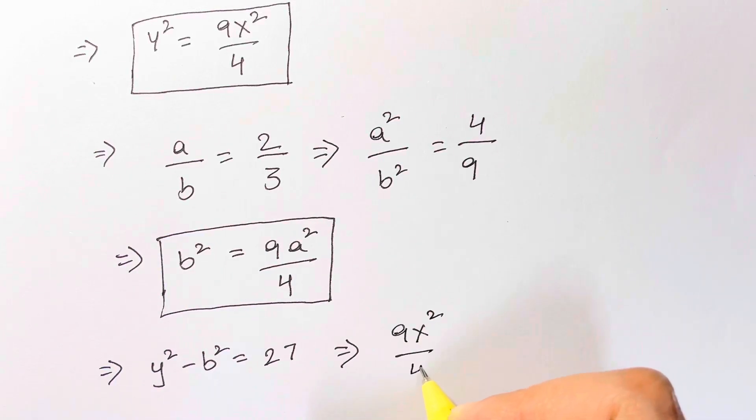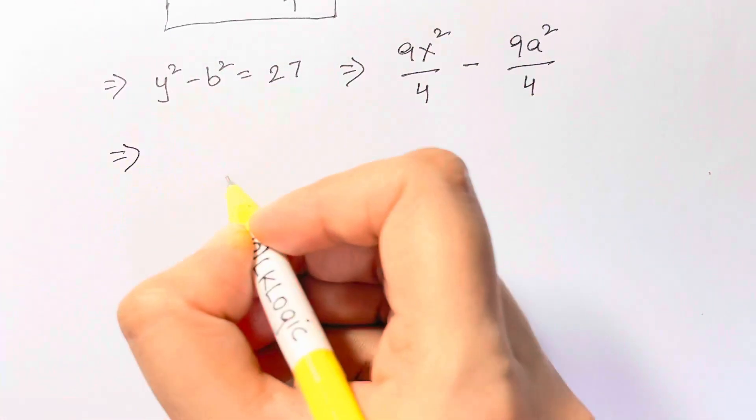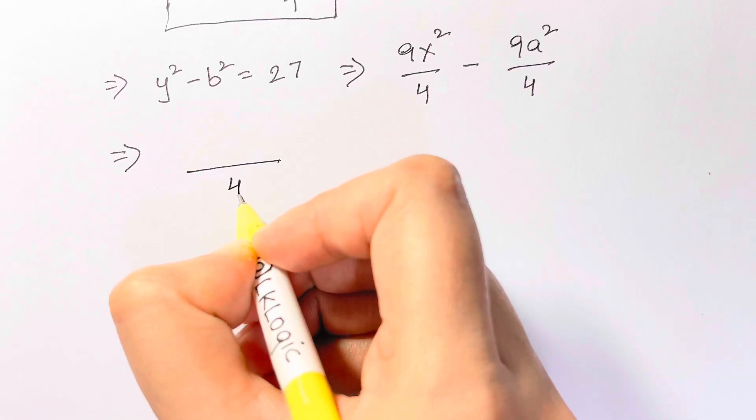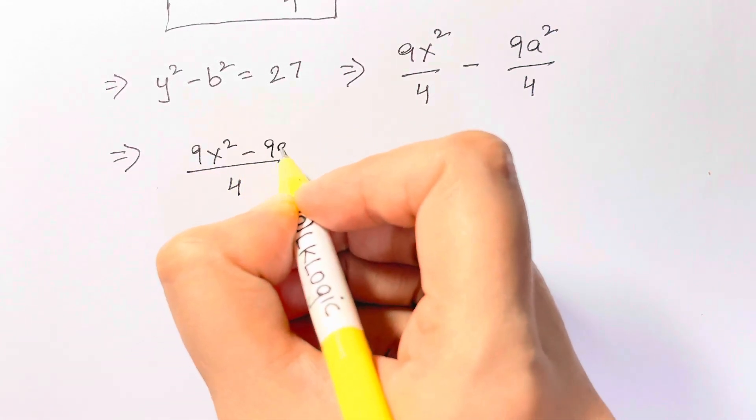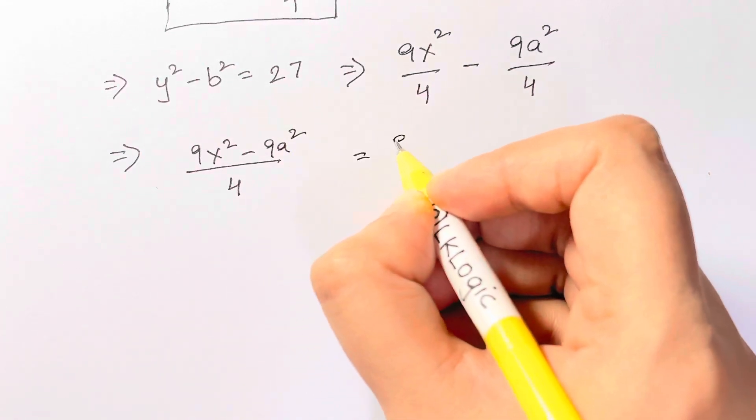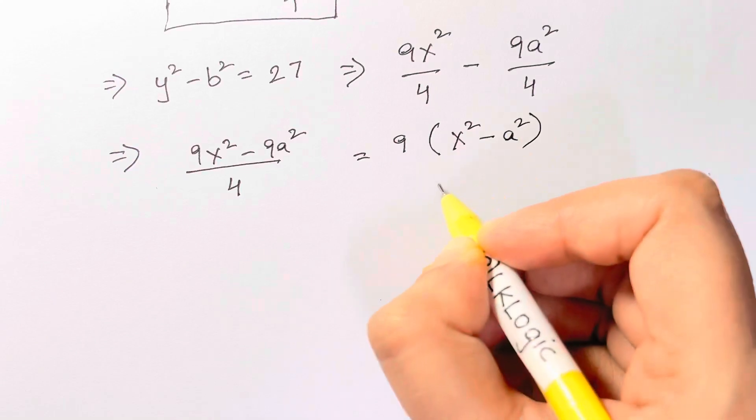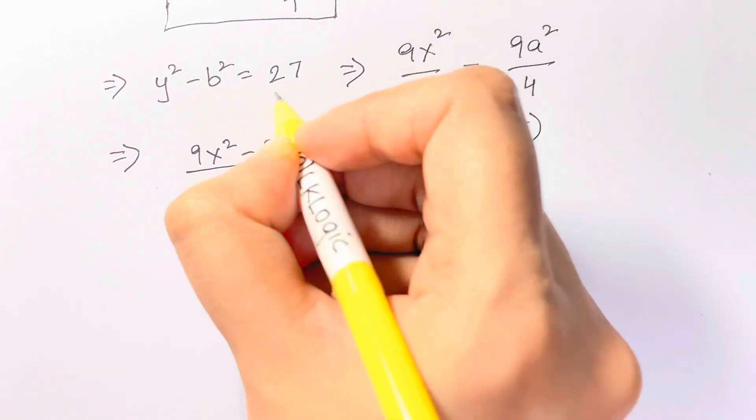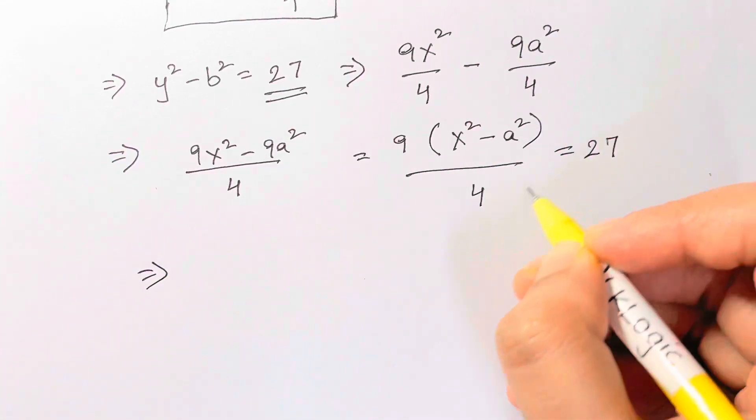Now as the denominators are the same, I'm going to take that common four. I'm left with nine x square minus nine a square. Let me take out nine common. I'm left with x square minus a square over four, and which is equal to 27. Let us cross multiply.